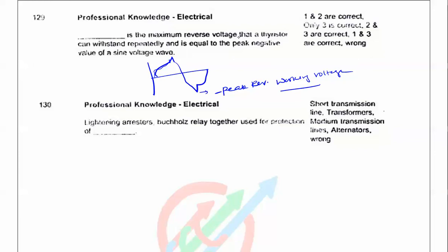The answer for this one is peak reverse working voltage is the maximum reverse voltage that a thyristor can withstand repeatedly and is equal to the peak negative value of the sine wave voltage. This is the peak reverse voltage without getting the thyristor's damage. Next question: Lightning arresters and Buchholz relay together used for the protection of transformers.